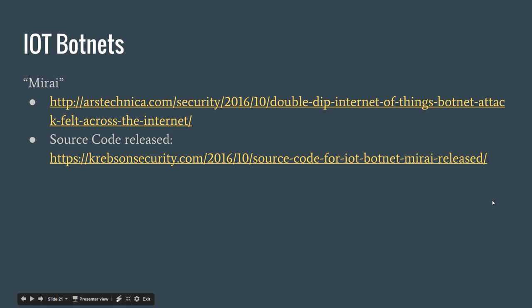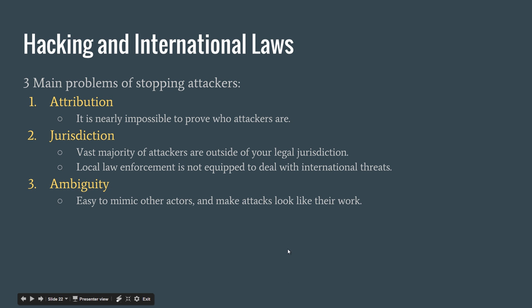Another trend worth covering is the rise of smart device botnets, or IoT botnets — most notably the Mirai botnet, whose source code was released. The three main problems of stopping attackers in international law are: A, the attribution problem; B, the jurisdiction problem — the vast majority of attackers are outside your legal jurisdiction and local law enforcement is not equipped to deal with international threats; and C, the ambiguity problem — it's easy to mimic other actors if you have enough resources.